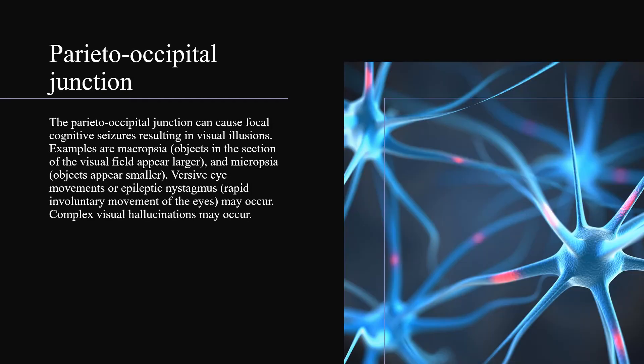The parietal occipital junction can cause focal cognitive seizures resulting in visual illusions. Examples are macropsia and micropsia. Versive eye movements or epileptic nystagmus may occur, and complex visual hallucinations may also occur.